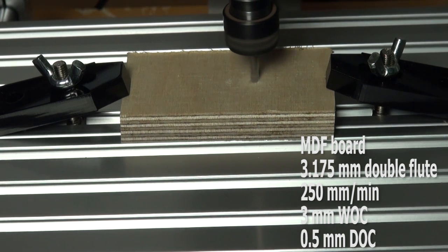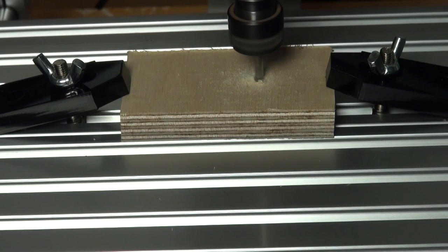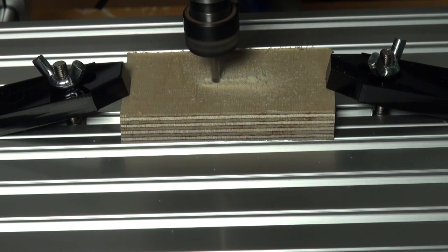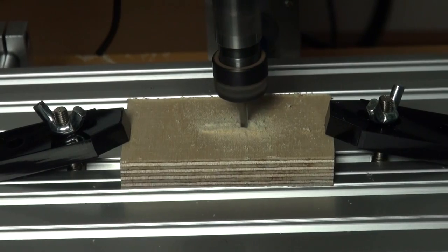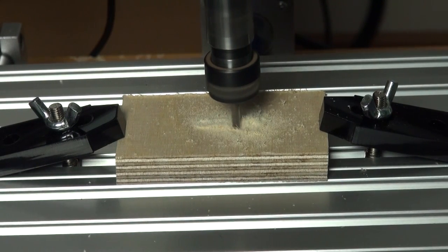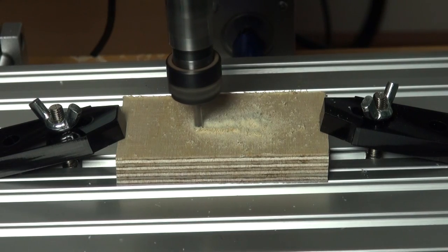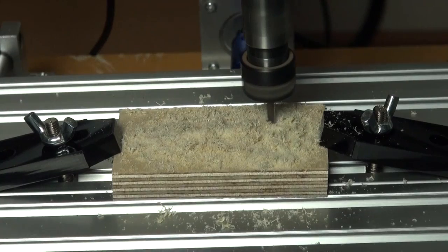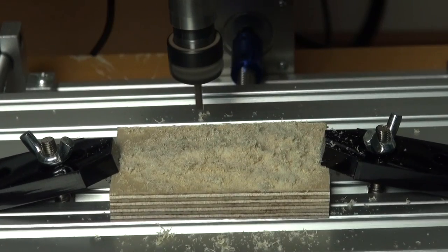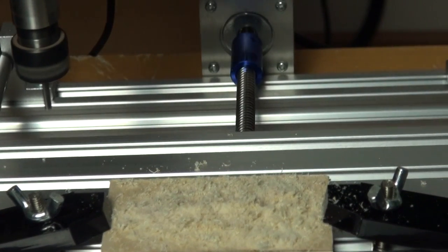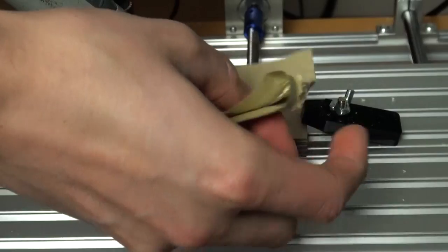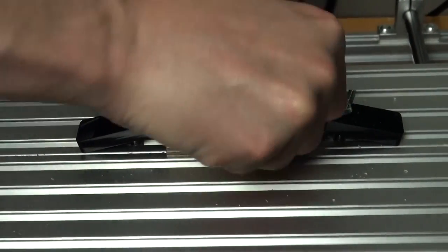After that I tried a much harder kind of wood. I tried the same rocket shape with the same settings as the cut in the MDF. It also came out perfect.